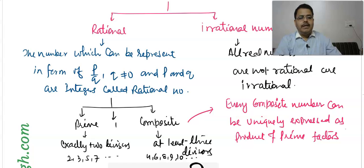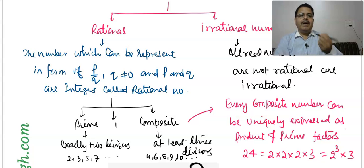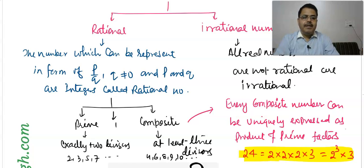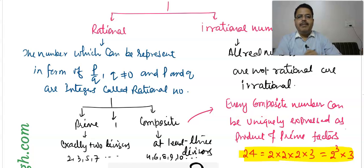If there is a number that is 24, we can express it as 2 into 2 into 2 into 3, which equals 24. This factorization is unique — there is no other form. We can choose different arrangements such as 4 into 6 or 3 into 8, but when broken down into prime factors, it always gives 2³ into 3.